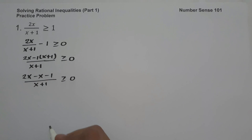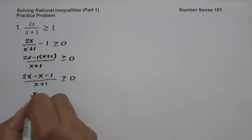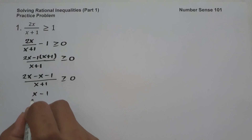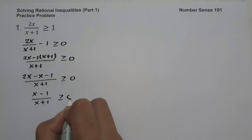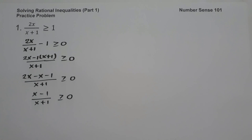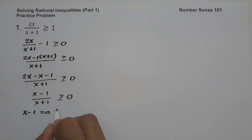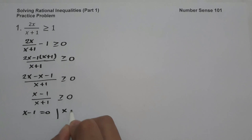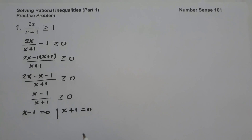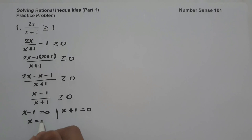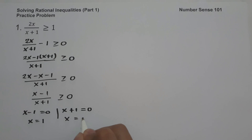Simplifying, 2x minus x is x minus 1, all over x plus 1, greater than or equal to 0. The next step is to equate x minus 1 equal to 0 and x plus 1 equal to 0, giving us x equals 1 and x equals negative 1.